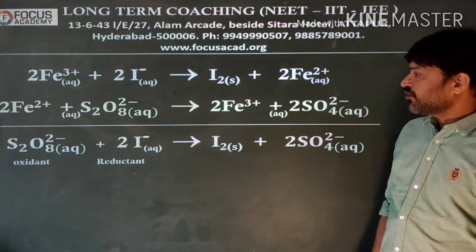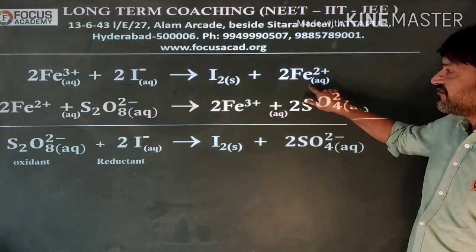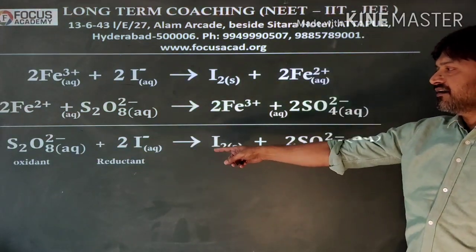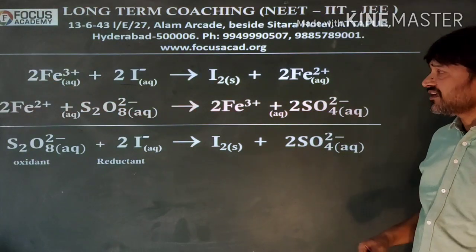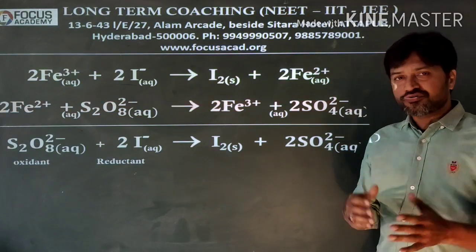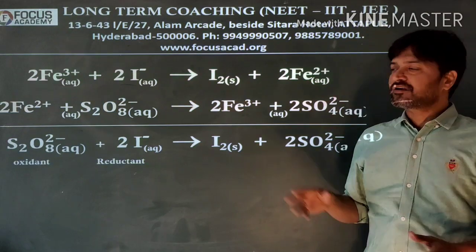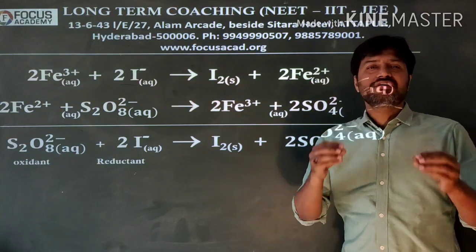So if you see the overall reaction, you have peroxidisulfate oxidizes iodide to iodine and it gets converted to sulfate. So in the overall reaction you don't see ferrous or ferric because it gets cancelled out.